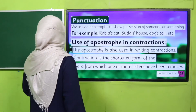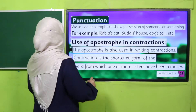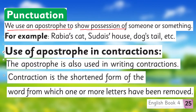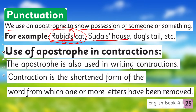Good job! Now I am giving you another concept — punctuation. We use an apostrophe to show possession of someone or something. For example, 'Rabia's cat' — this apostrophe-s shows that the cat belongs to Rabia, Rabia is the owner. Likewise, 'the dog's tail' etc. But this apostrophe is also used for contraction.